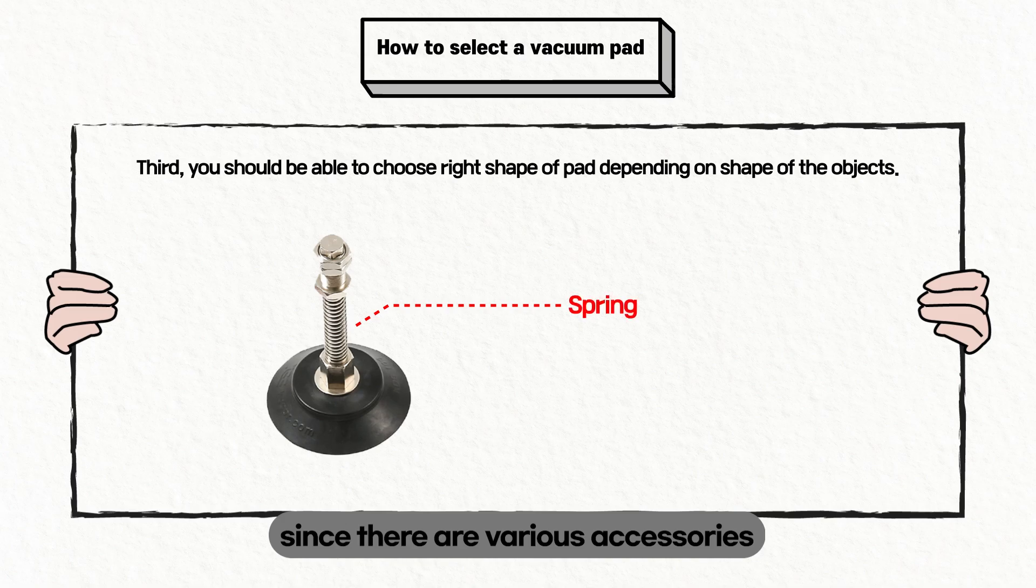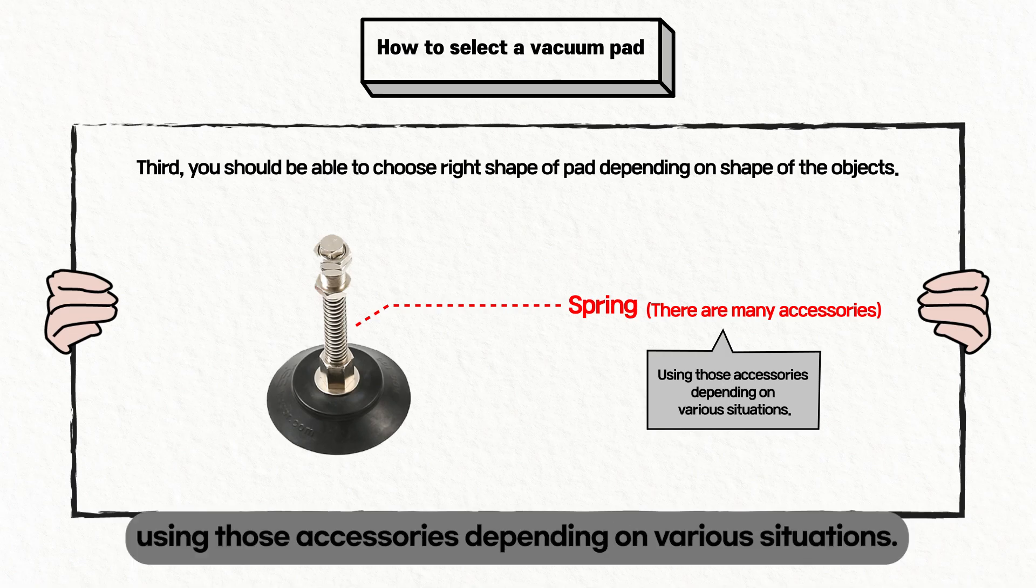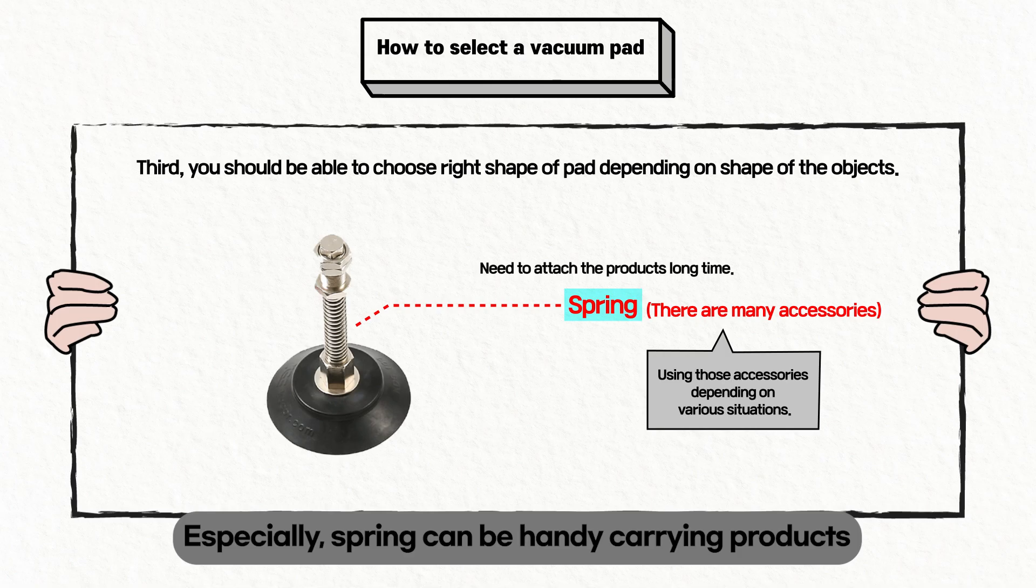Lastly, since there are various accessories for using vacuum pads such as springs, you can raise work efficiency using those accessories depending on various situations. Especially, springs can be handy carrying products when you need to attach the products for a long time.